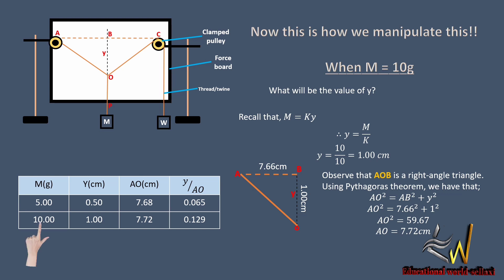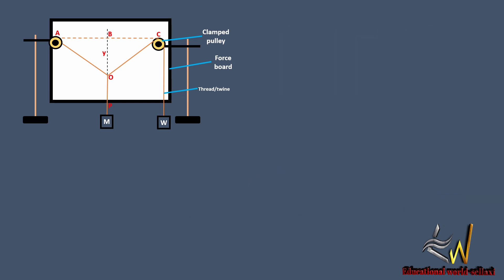So we've got our AO, we will now move to the table of values. When M equals 10 grams, y equals 1 centimeter, AO equals 7.72 cm, and y over AO will be 0.129. So we change our white paper and continue.